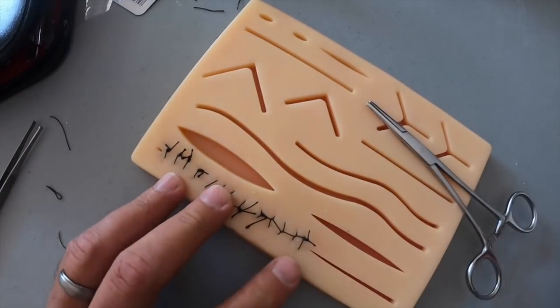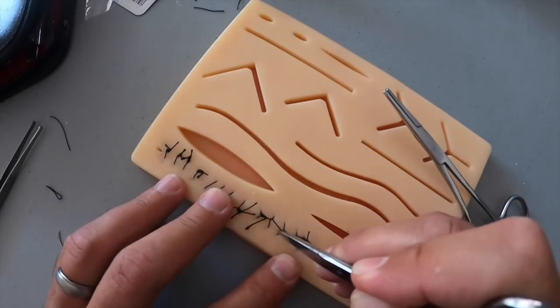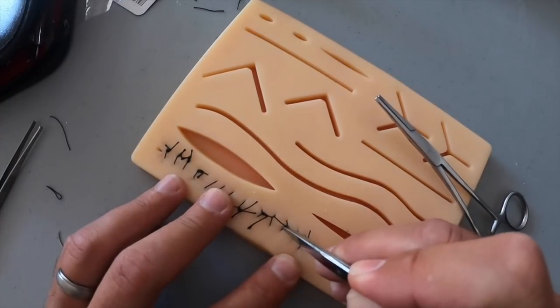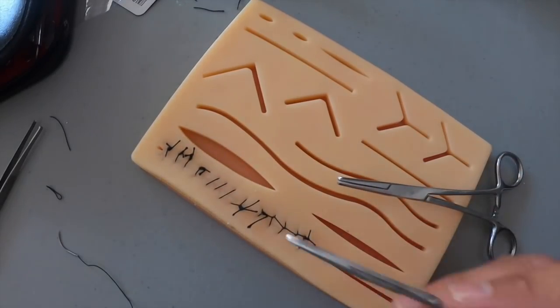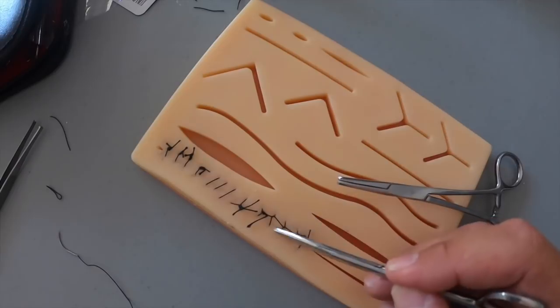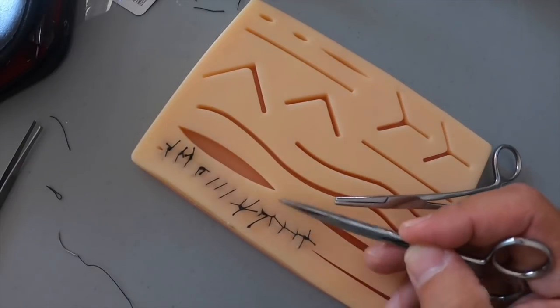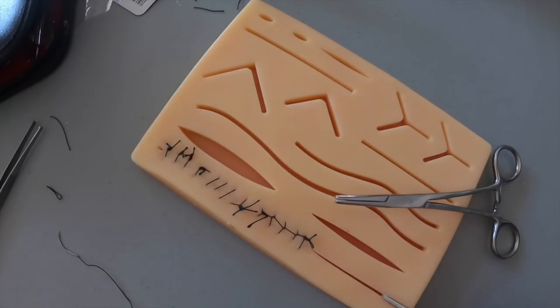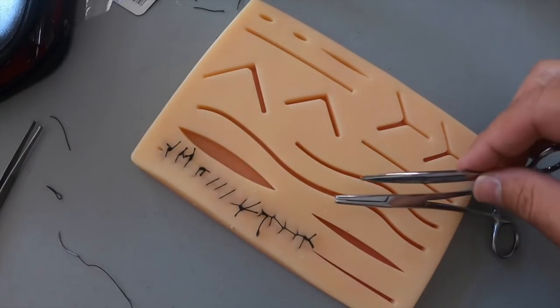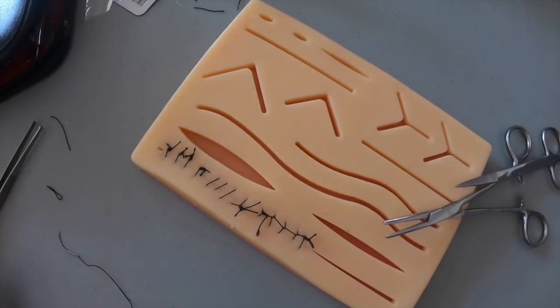And this is a continuous interlocking. Again, this is not what it would look like in real tissue, I'm going to show you what it looks like in real tissue. But basically you're coming through each one, through each one and interlocking with the loop so that it holds its stitch together as you continue to move through the laceration repair.